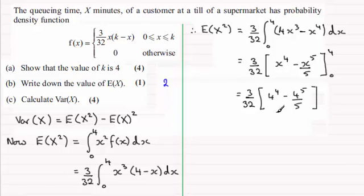And if you work this out on your calculator you'll find you get 24 over 5, 24 fifths then. So we can now feed this back into our equation here for the variance of X.